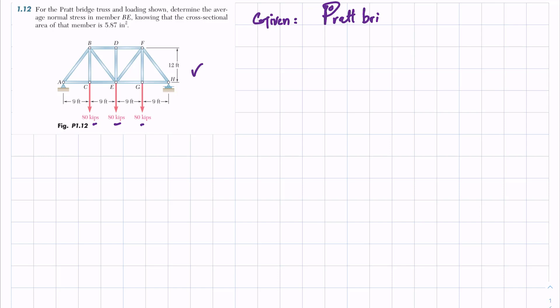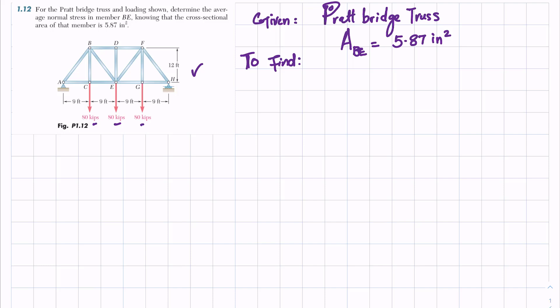It is given that this is a Pratt bridge truss. We have to find the average normal stress in member BE, knowing that the cross-sectional area of BE is 5.87 square inches.